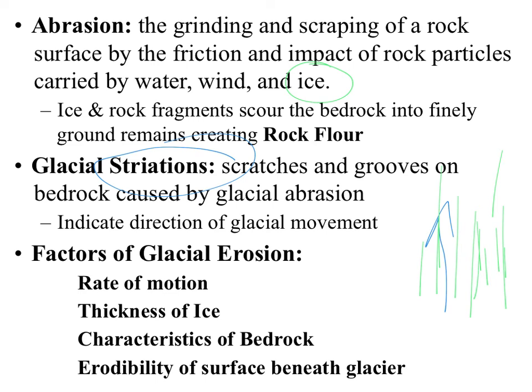Factors that affect glacial erosion include: the rate of motion — the faster the glacier moves, it affects the size of grain it's able to pick up; the thickness of the ice — thin ice won't pick up as much because you won't get as much melt water underneath; remember basal slip — that was because you were able to get melt water underneath the glacier; the characteristics of the bedrock — what type of rock, sedimentary, metamorphic, or igneous; and the erodibility of the surface beneath. Depending on what the glacier is moving over drastically impacts how erosion takes place.